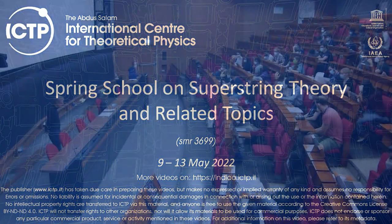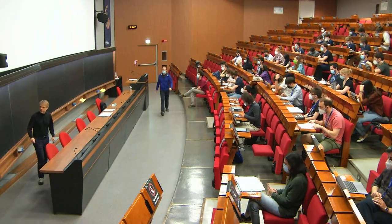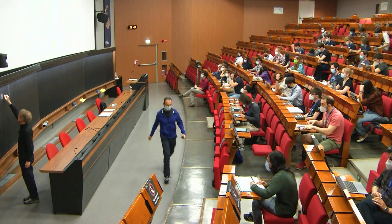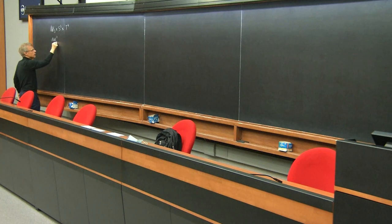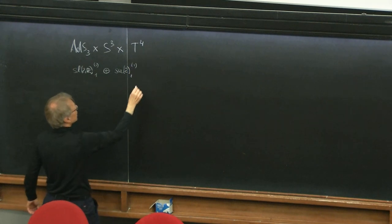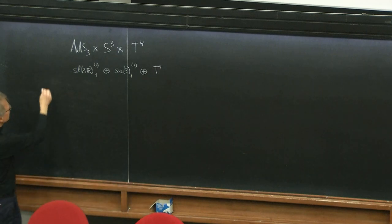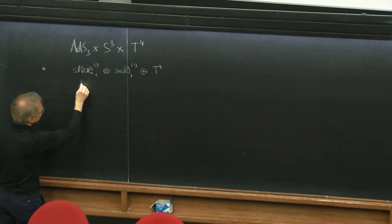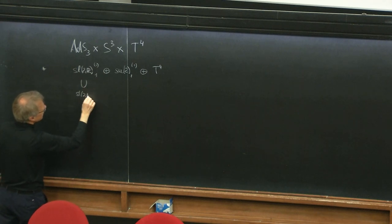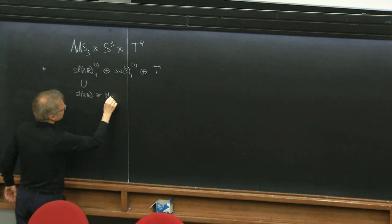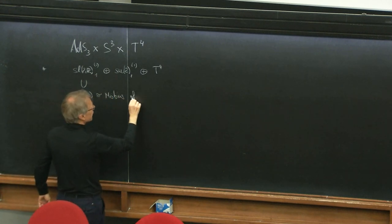Last time we looked at ADS3 cross S3 cross T4, and the way we described this was in terms of the SL2R N=1 Wess-Zumino-Witten model at level 1, plus the SU2 supersymmetric WZW model at level 1, plus T4 on the world sheet. We know that the SL2R subalgebra here is to be identified with the Möbius symmetry of the dual CFT.